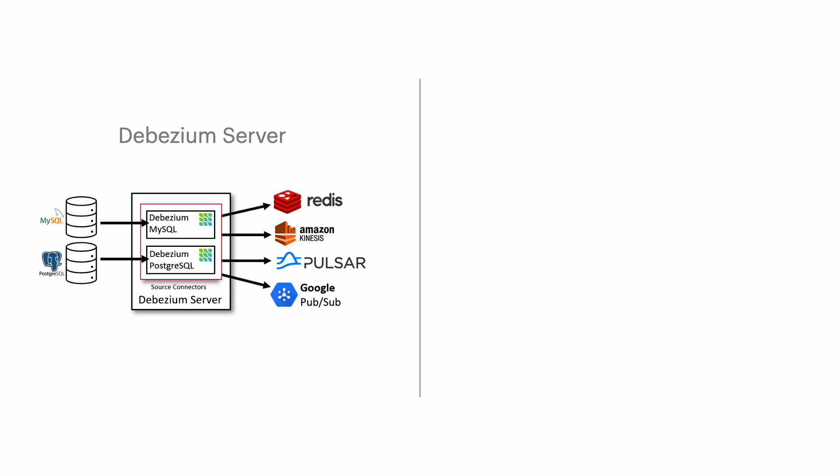Another deployment option is to use the standalone Debezium server. If you have a messaging infrastructure other than Kafka, this is your best choice. You can use the same set of Debezium source connectors with the Debezium server, without depending on Kafka Connect and Kafka. Once captured, the changes are propagated to a variety of messaging infrastructures, including Amazon Kinesis, Google Cloud Pub/Sub, or Apache Pulsar.